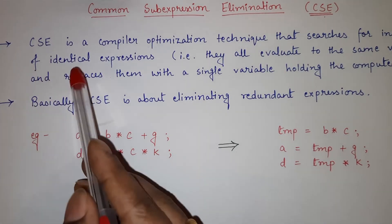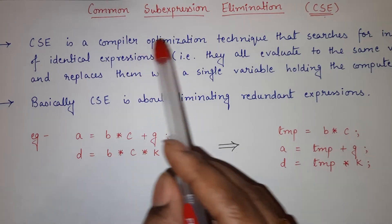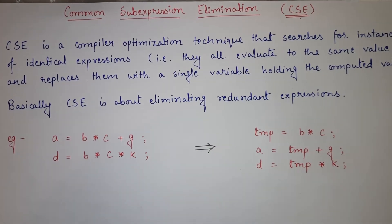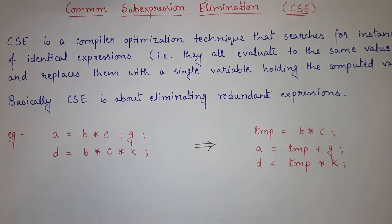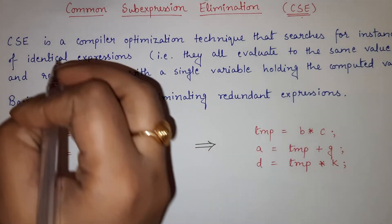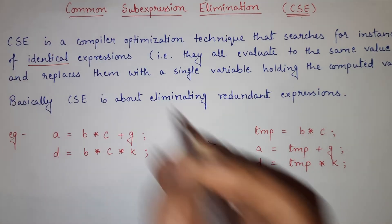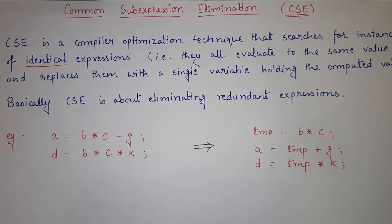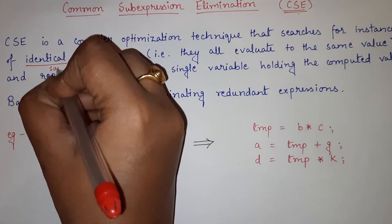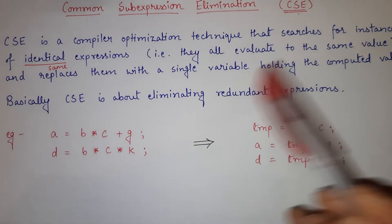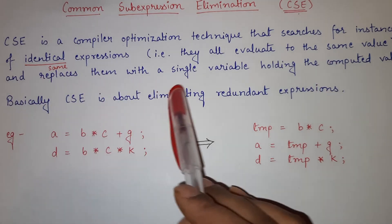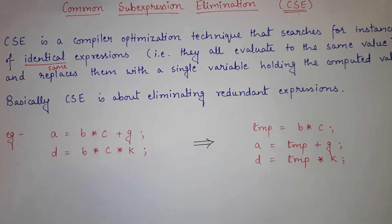Common sub-expression elimination is a compiler optimization technique that searches for instances of identical expressions — that is, expressions that all evaluate to the same value — and replaces them with a single variable holding the computed value.